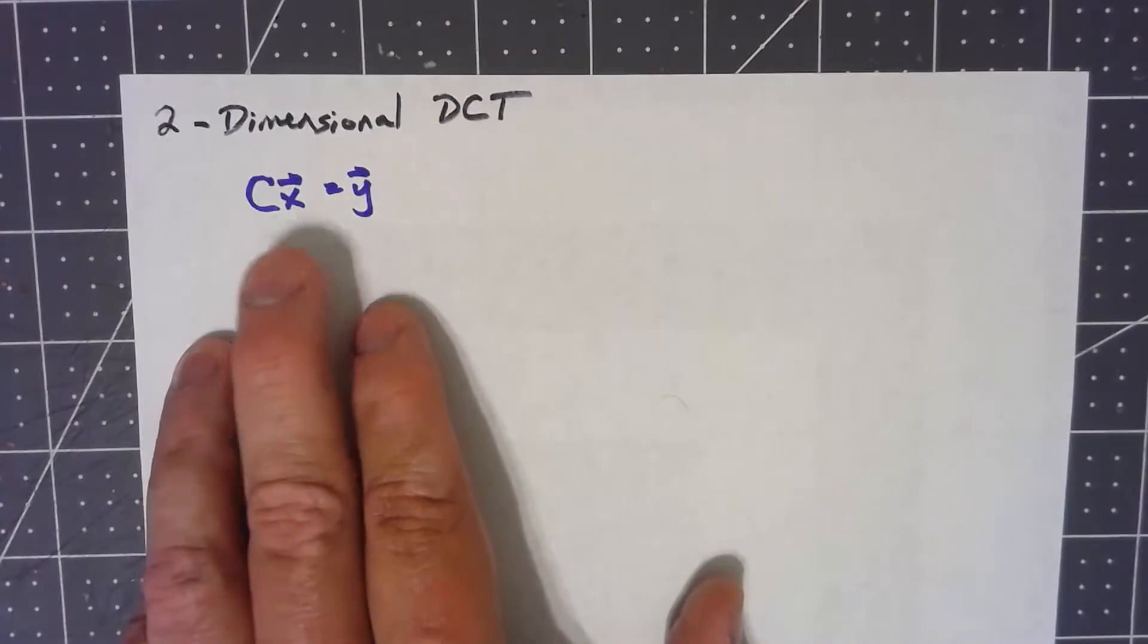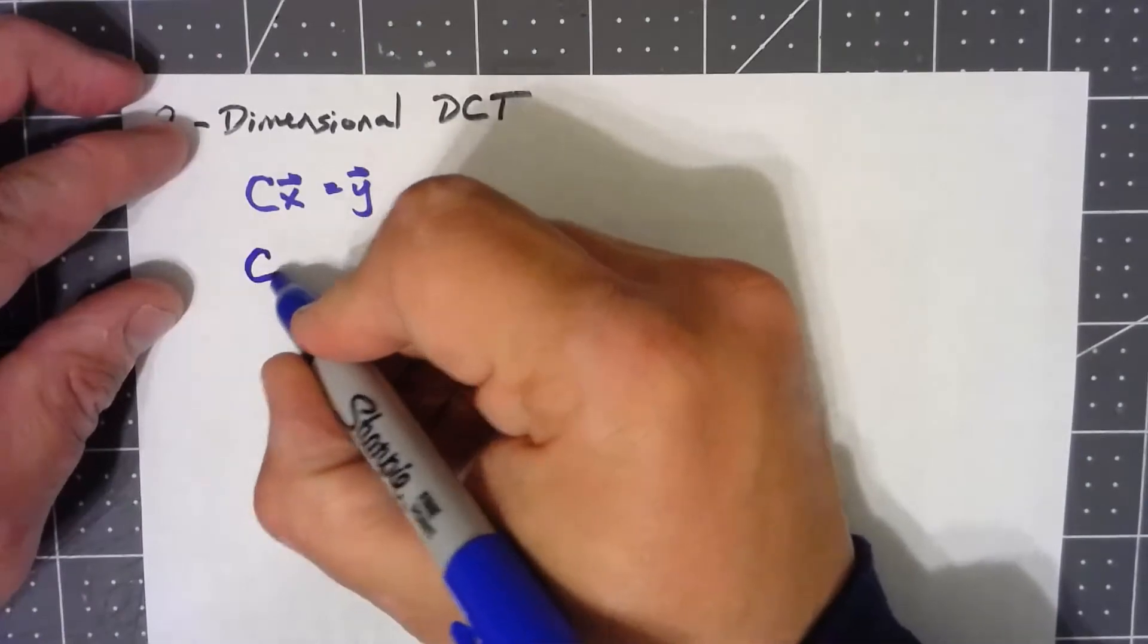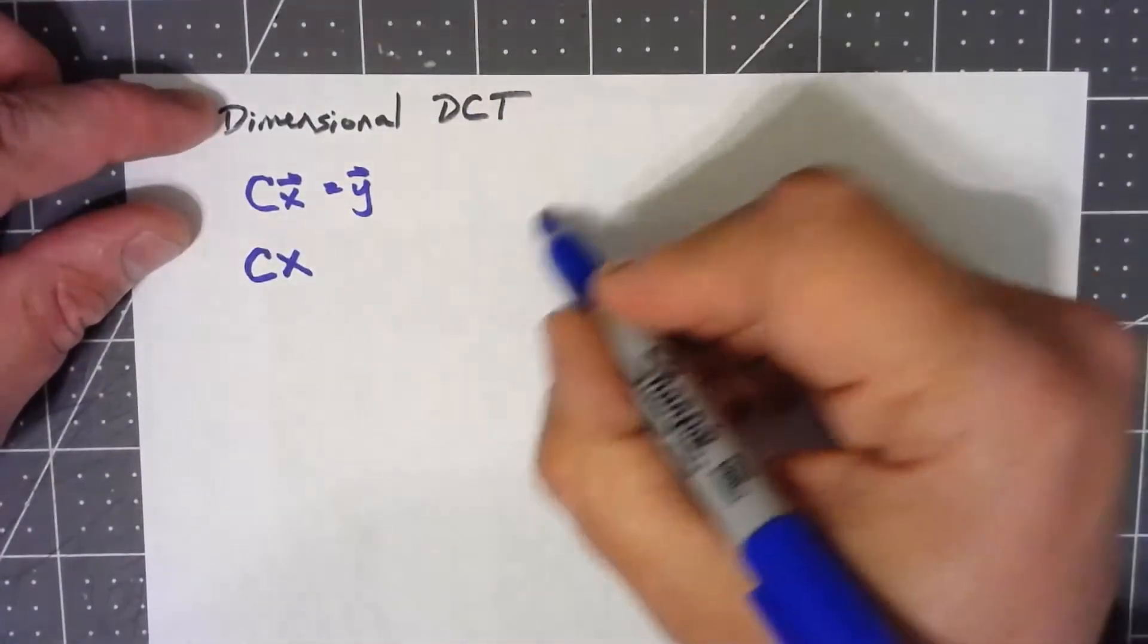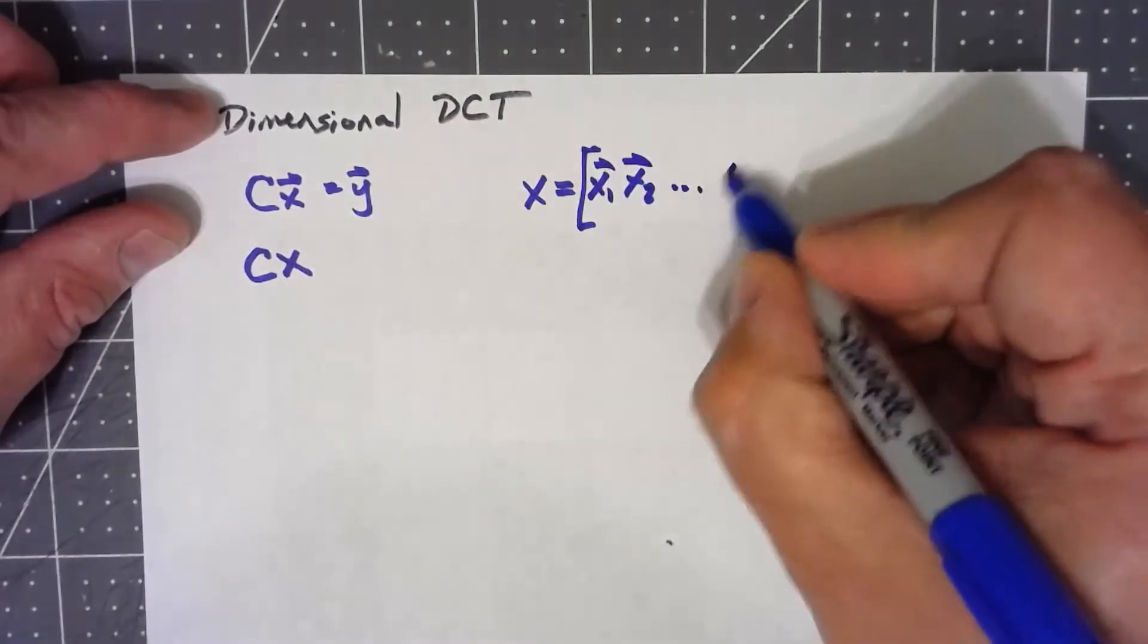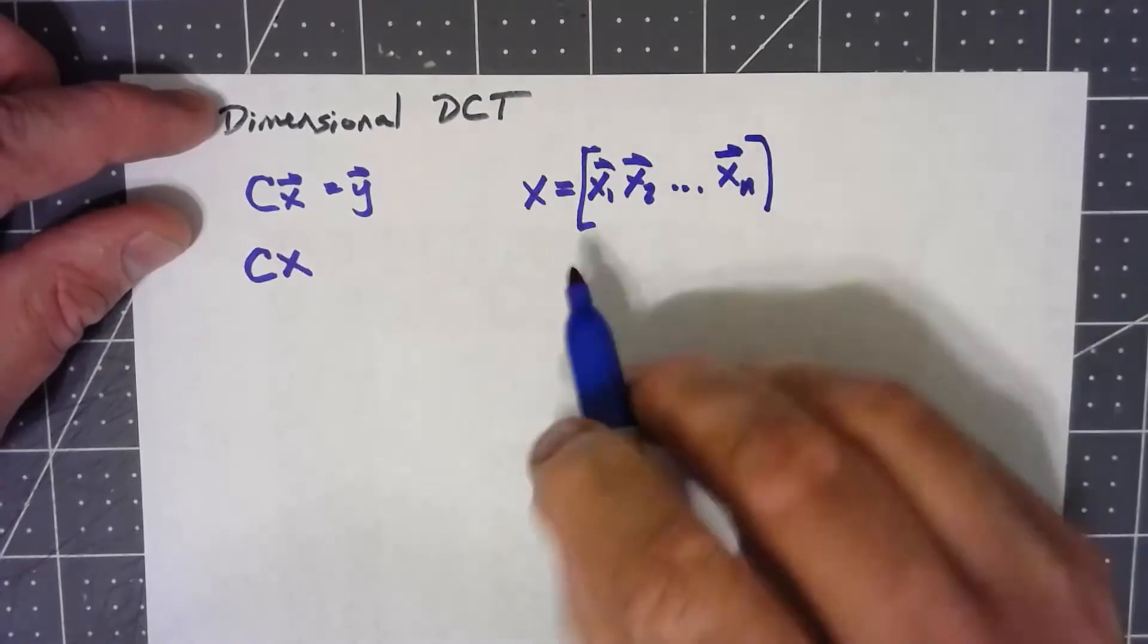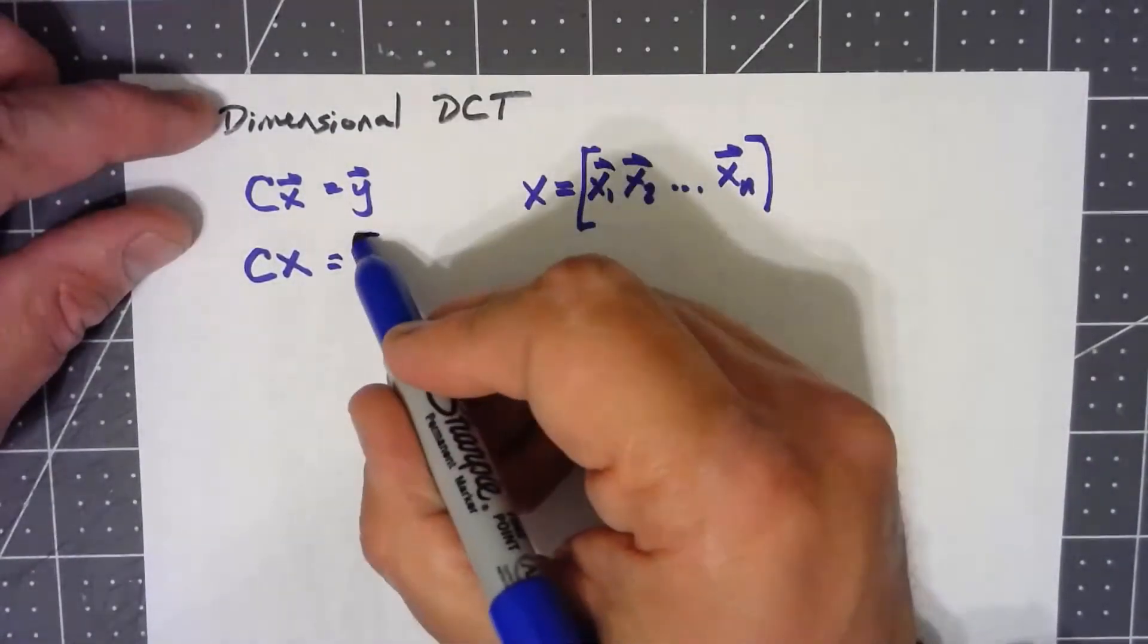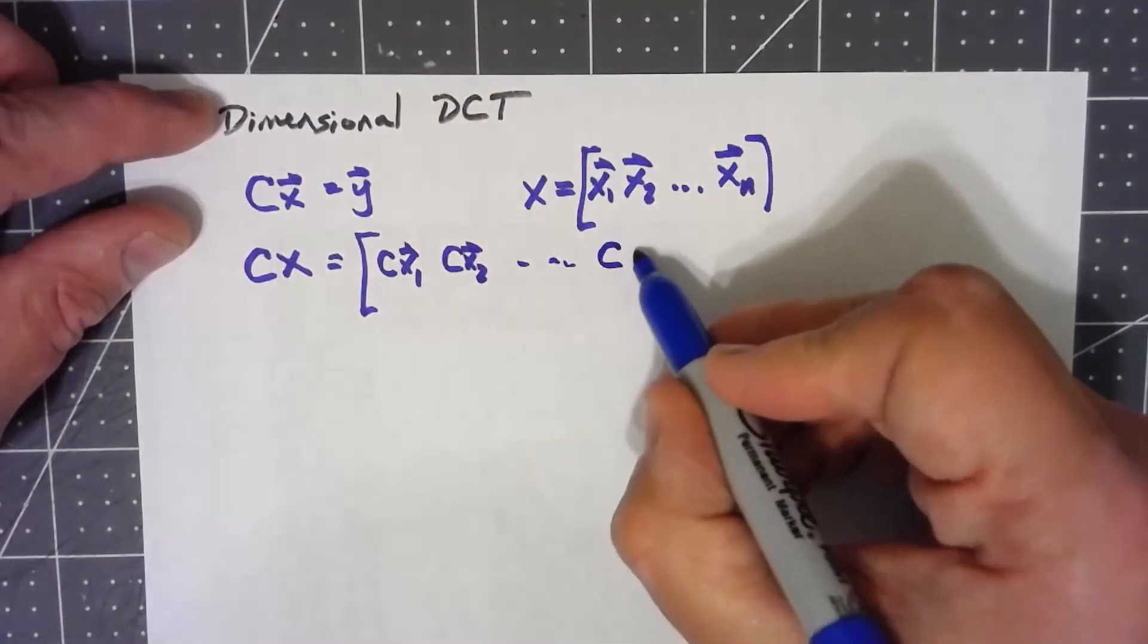Now let's imagine that I took that C and instead multiplied it by a matrix. Well, effectively what that would do is do the DCT to each column separately. So if my x vector was x1, x2, up to xn, if I took C times x vector I would get Cx1, Cx2, all the way up to Cxn.